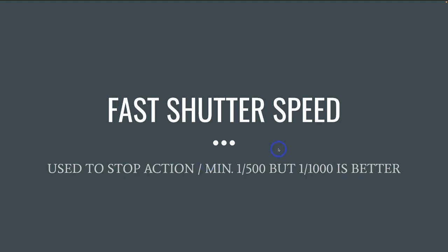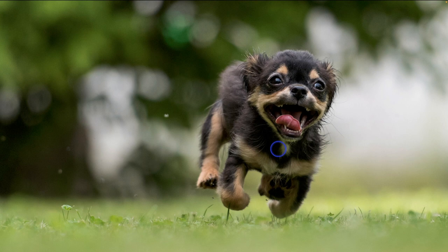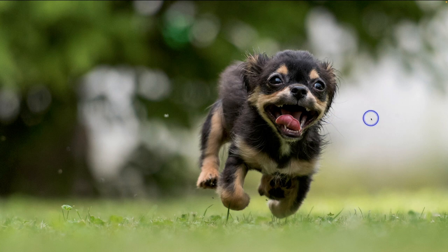Now let's take a look at fast shutter speed and what it does for us — it's going to stop action. Remember, the minimum is 1/500th of a second, but if you really want to stop action I would suggest moving up to 1/1000th of a second. Before we talk about shutter speed in this image, the best thing this photographer did was get down to the level of the subject, which is this little dog. If you were standing up trying to take this photograph it would not be as strong. In this instance we are using a fast shutter speed — you can see the dog is totally up in the air and we caught everything at the moment. This would be an excellent example of an extremely fast shutter speed, probably around 1/1600th to 1/2000th of a second.